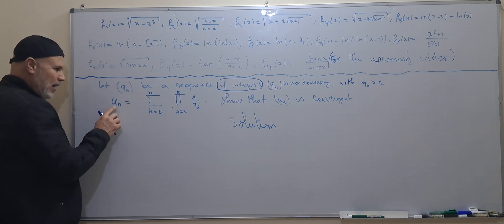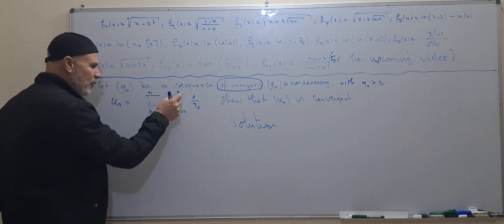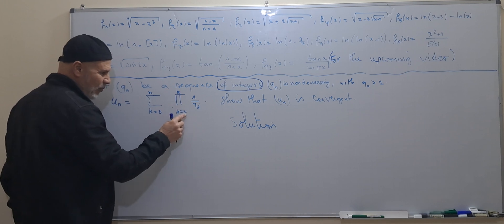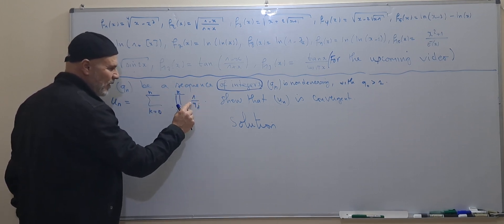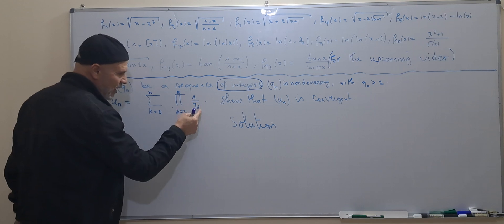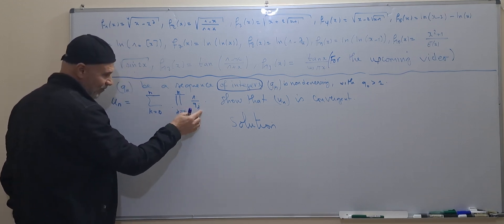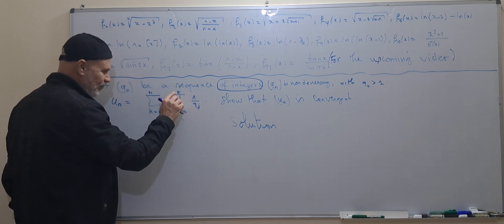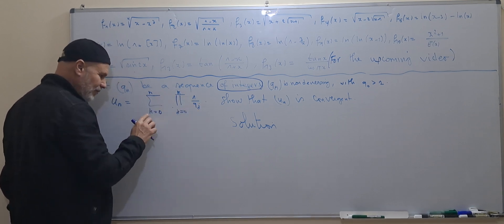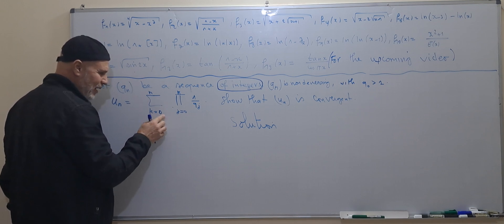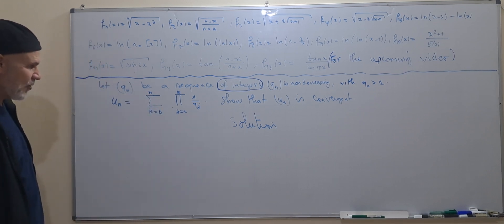Let u_n be the sum from k equals zero to n of the product from g equals zero to k of one over q_g. So here we start from g equals zero until k, and we sum from k equal to zero until n. Show that u_n is convergent.